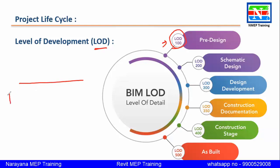In LOD 100, for example, we will give only one line. If we are using some pump, we will not put the actual pump — we will put it as a block, just as a basic tentative indication. It is not detailed; it is initial. When we proceed further to LOD 300 or 350, we will put the actual pumps with the actual size and all the details.